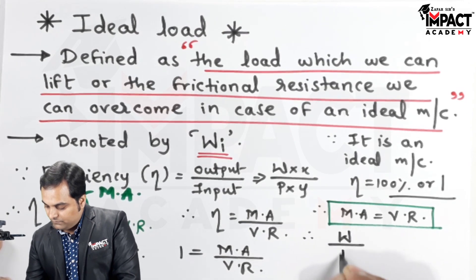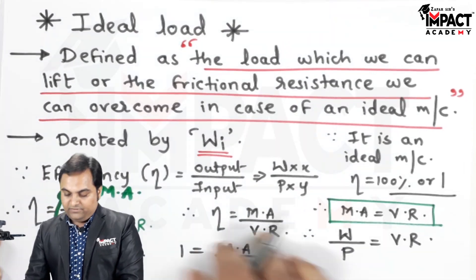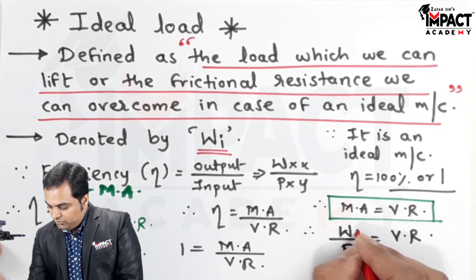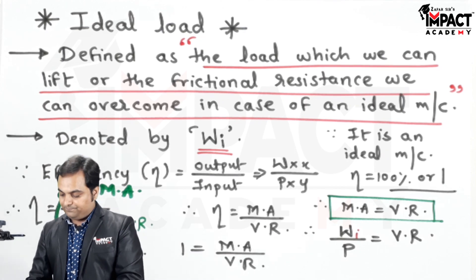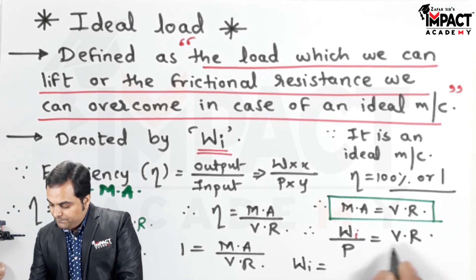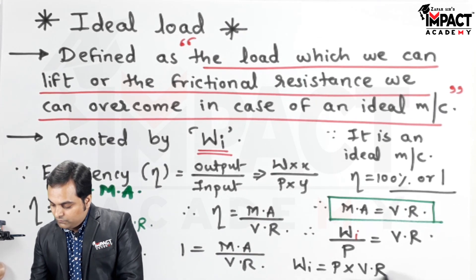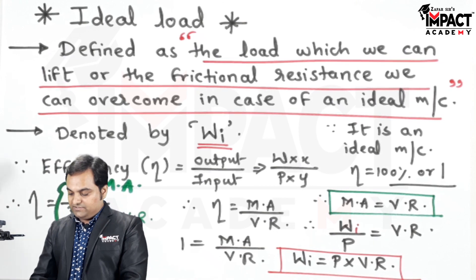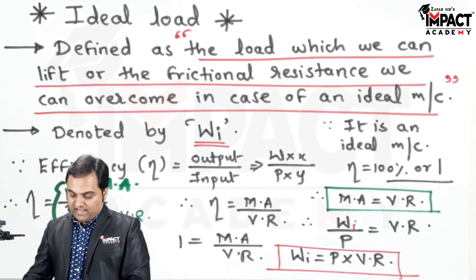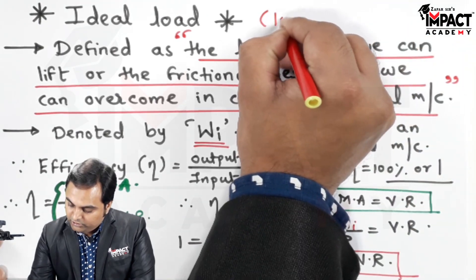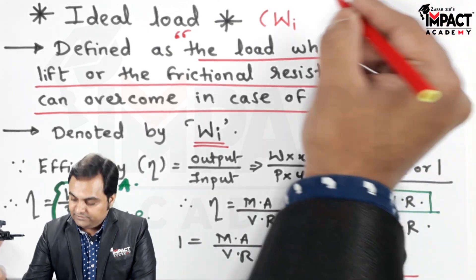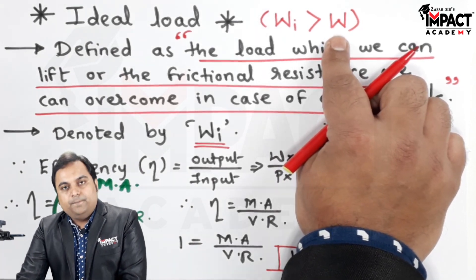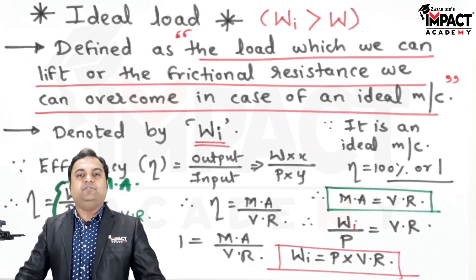Mechanical advantage (MA) is given by W upon P. Since we want the ideal load denoted by W suffix i, we add a suffix i to the load. So basically W suffix i equals P into VR, where P is the actual effort and W suffix i is the ideal load. Whenever we have an ideal machine, the ideal load which we can lift is considerably greater than the load which we can lift in an actual machine, because the ideal machine lifts a greater amount of load due to the absence of friction.